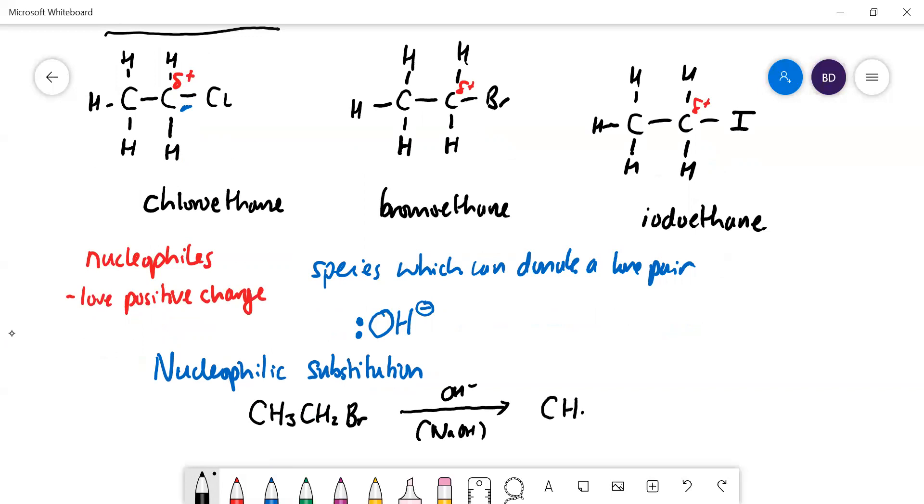That will react with sodium hydroxide solution. The bromine and the hydroxide are going to swap places, and you end up with CH3-CH2-OH, so you get an alcohol, and the bromine atom will come off as the Br minus ion. That would be an equation.